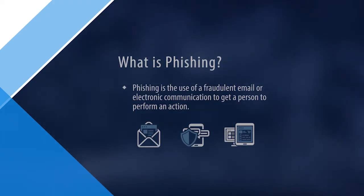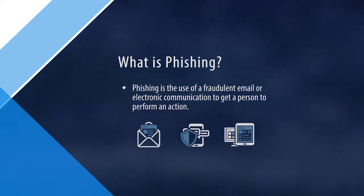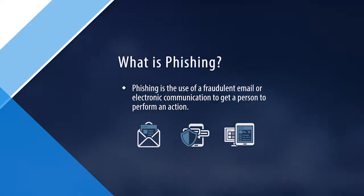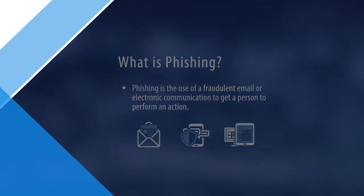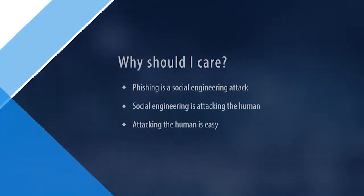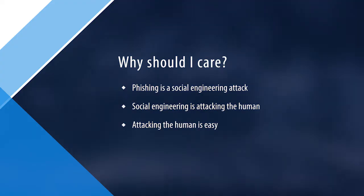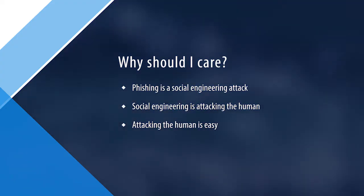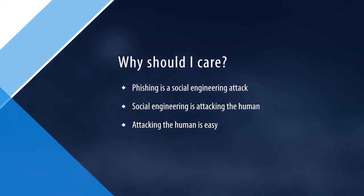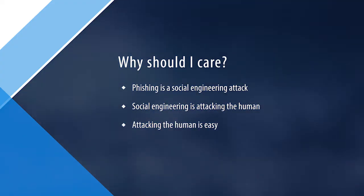What is phishing? Phishing is the use of a fraudulent email or electronic communication to get a person to perform an action. Phishing is a social engineering tactic that is often a component of an information security attack. Social engineering can be referred to as attacking the human. The human is commonly the weakest link in the security chain.